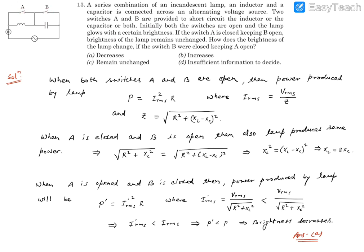First situation when both switches are open. So if both A and B are open, this is going to be RLC series circuit. This RLC series circuit will have a certain current running through it, and that IRMS current can be written as VRMS divided by impedance.